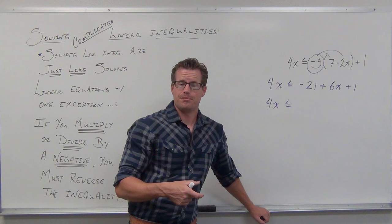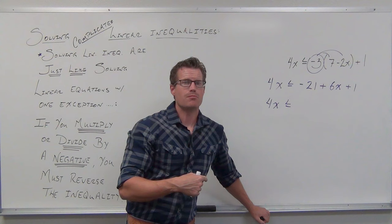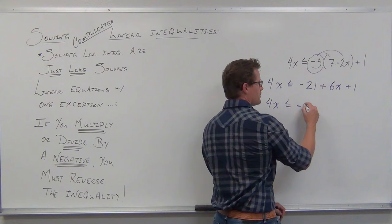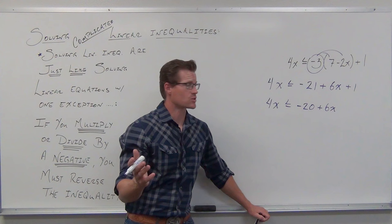Do not do anything to both sides of your inequality yet. Just like equations, you need to combine like terms first. Before you start working on both sides — adding or subtracting to both sides — you should have at most four terms: two on one side and two on the other side. If you have more than two terms on either side, you need to combine like terms. In this case, we have 6x minus 20.